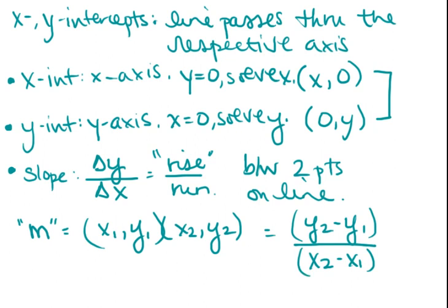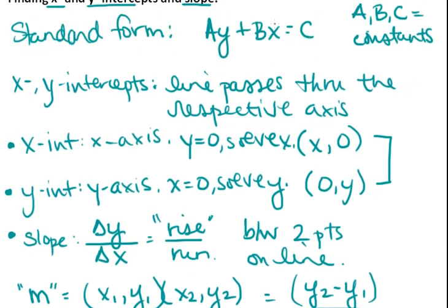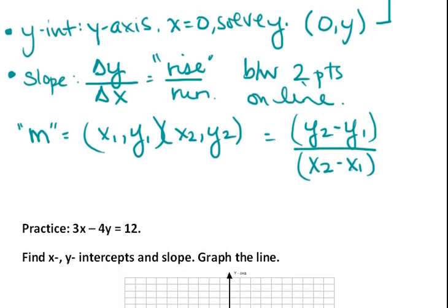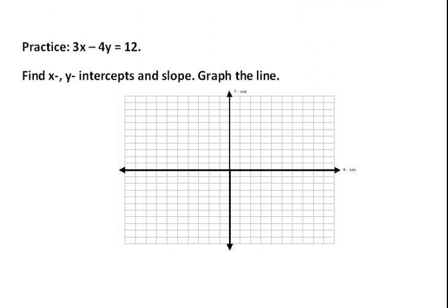So when you have an equation in standard form, you can solve for x and y intercepts, use those points to graph a line, and also find a slope. Let's look at some practice of this here.